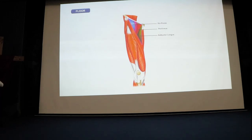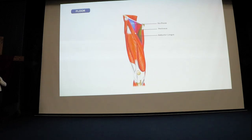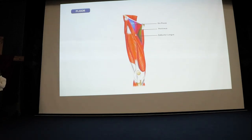Next is the lateral border. The lateral border is formed by the medial border of the sartorius muscle. So the lateral boundary of the femoral triangle is formed by the medial border of sartorius.